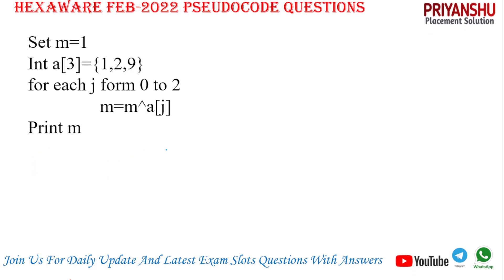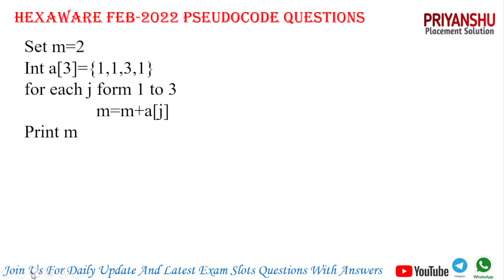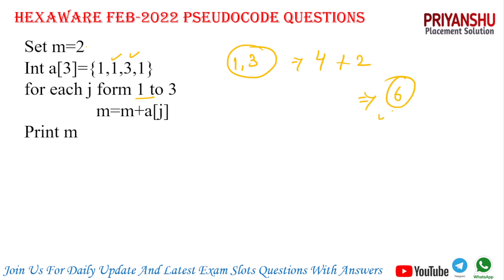Next question: for each j from 1 to 3, it executes only for j = 1 and j = 3, meaning it runs twice. m[2] increments twice: m[2] = 4 + 2 = 6. So the answer is 6.